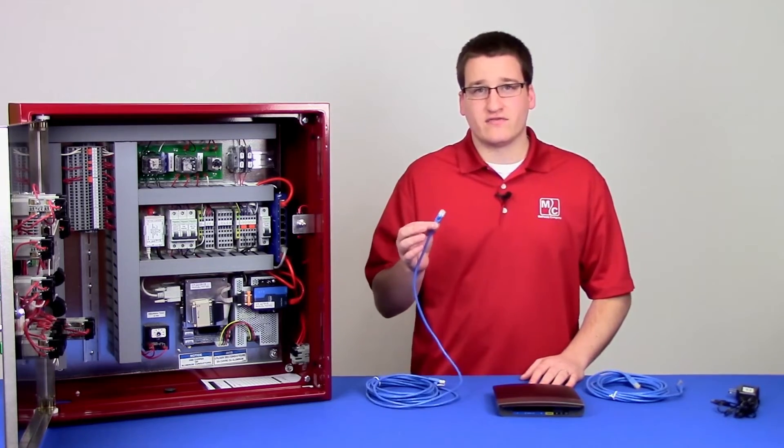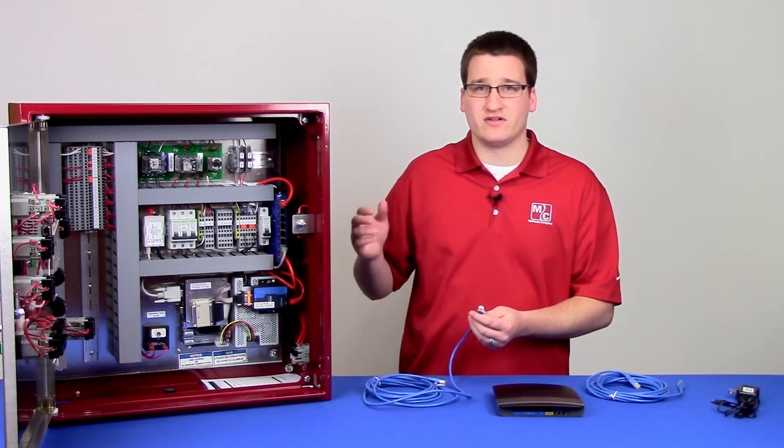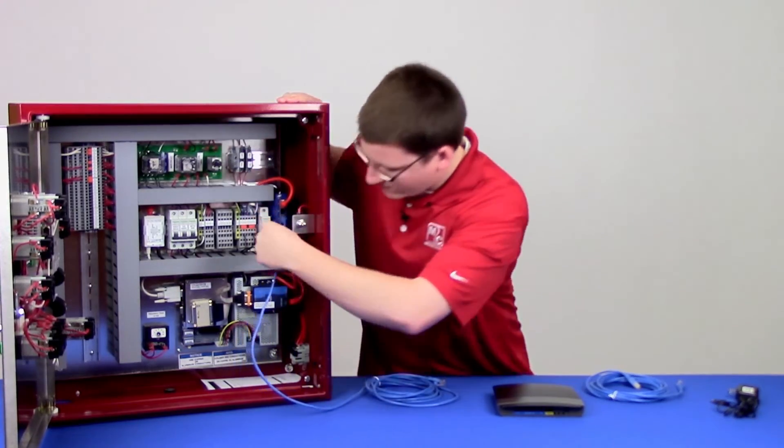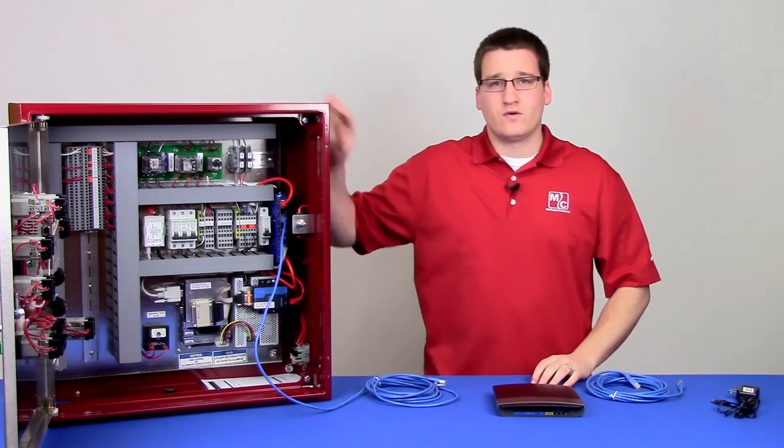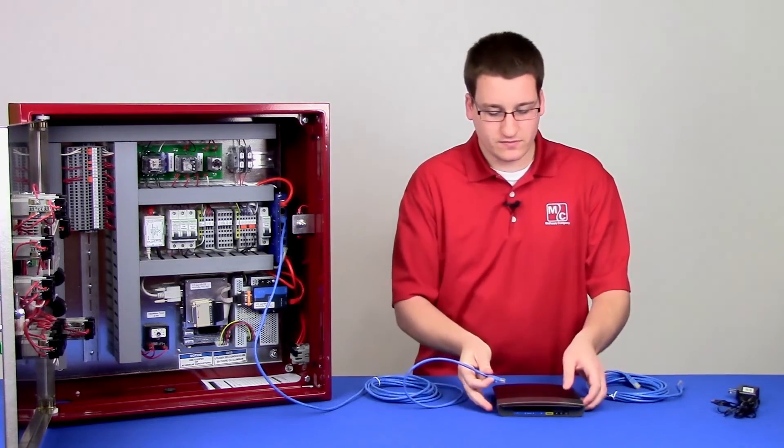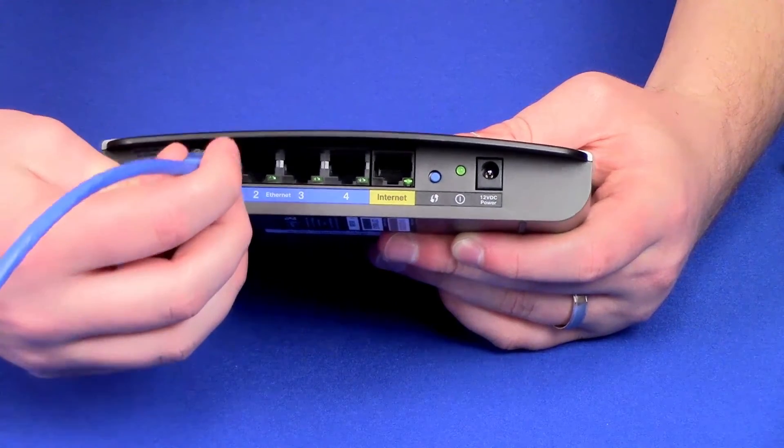You'll want to take the first end of your ethernet cable and plug it into your ethernet switch in any available port. Once that's in, take the other end of your ethernet cable and plug it into the back of your router in any of the numbered ports, 1 through 4.